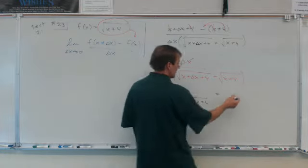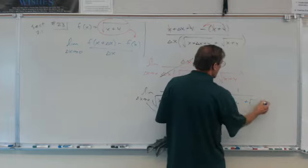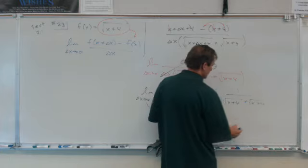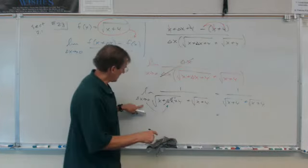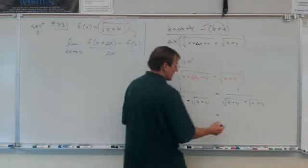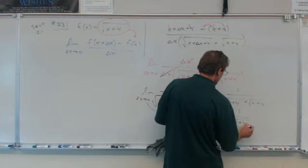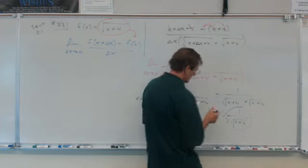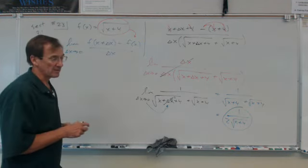1 over, and we have 2 of those radicals in the denominator, x plus 4 plus radical x plus 4. So the answer is going to be, so now we believe that the delta x becomes 0 here, so this term just disappears. We end up with 1 over 2 of these radical x plus 4s. And that's our answer. So that's the derivative of this f of x radical x plus 4.